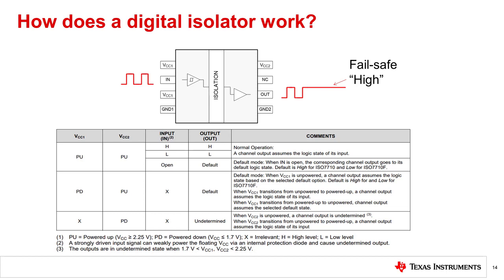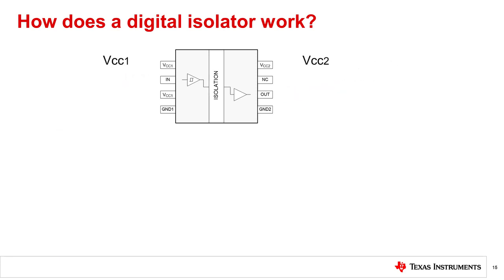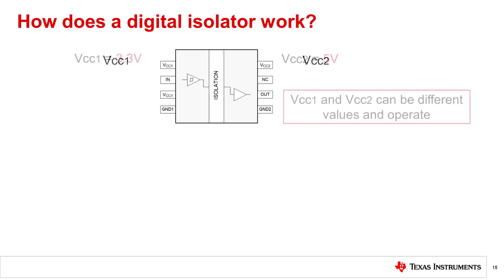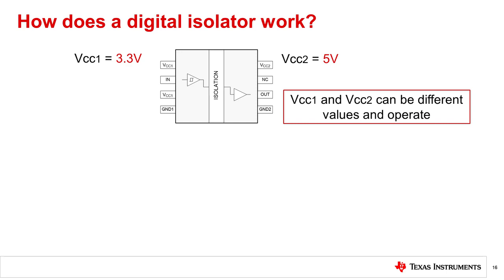Logic levels for digital isolators can range from 1.8 to 5.5 volts for both supplies, VCC1 and VCC2, though some devices may support a larger supply range. Because the isolator is based on two separate internal ICs, two different supply voltages can be used for each side of the digital isolator. Now that we have a high-level understanding of how the digital isolator works at a functional level, we will discuss the internal structure and architectures for digital isolators.